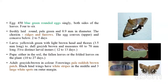The egg's chorion — the outermost protective covering — is full of ridges and furrows. The egg is convex on the upper surface and concave on the lower surface. The incubation period varies from two to five days.